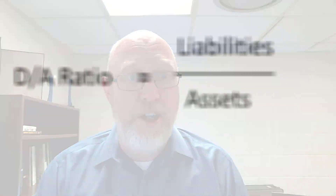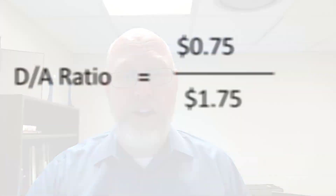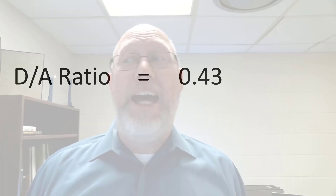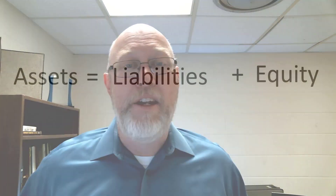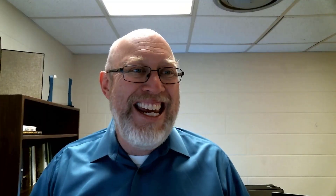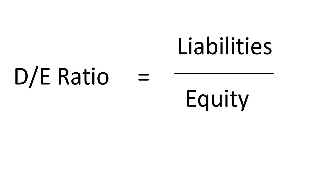The debt-to-asset ratio would be our liabilities — which we knew before, 75 cents — divided by the assets we just figured out. So we plug those numbers into the formula: 75 cents over a dollar seventy-five. We do the math and I'm getting a debt-to-asset ratio of 0.43. As always, never be afraid to double-check my math. If you apply this method — lather, rinse, repeat — if you know any single solvency ratio, no matter what it is, you can back out all the rest of them.